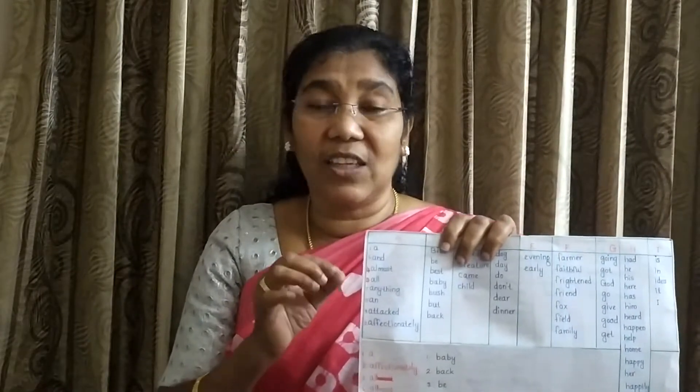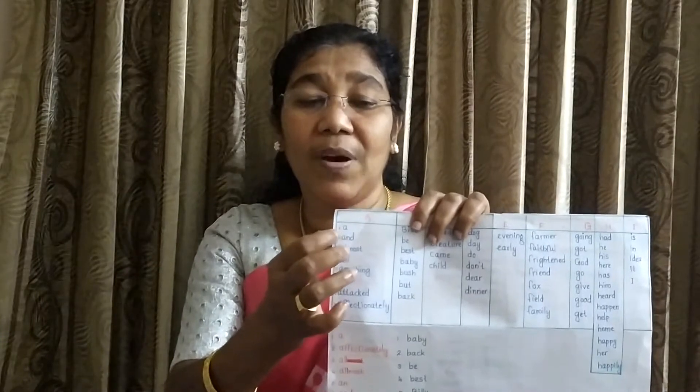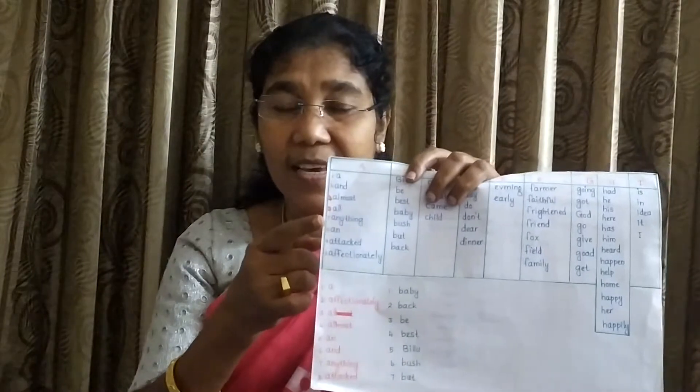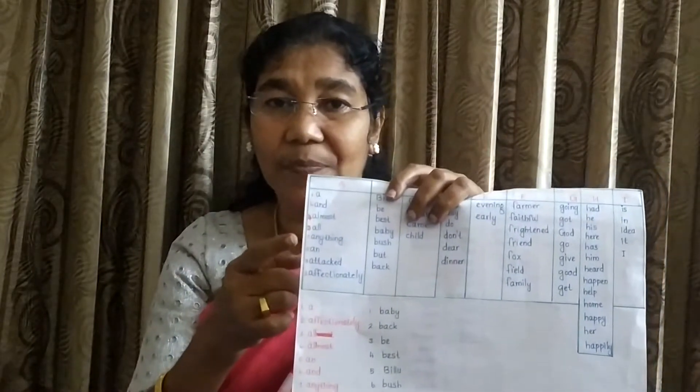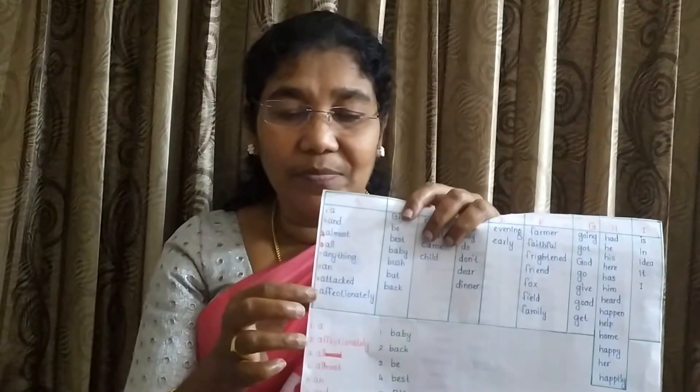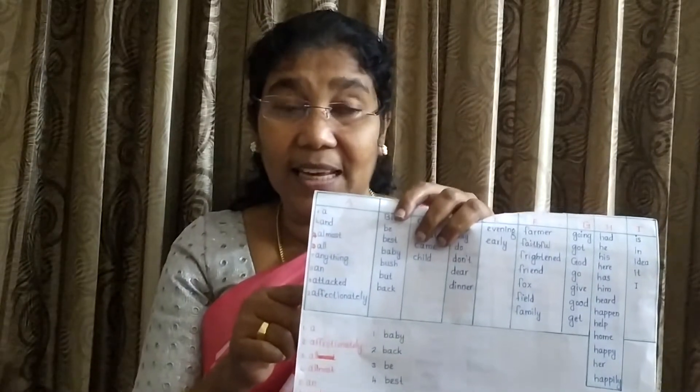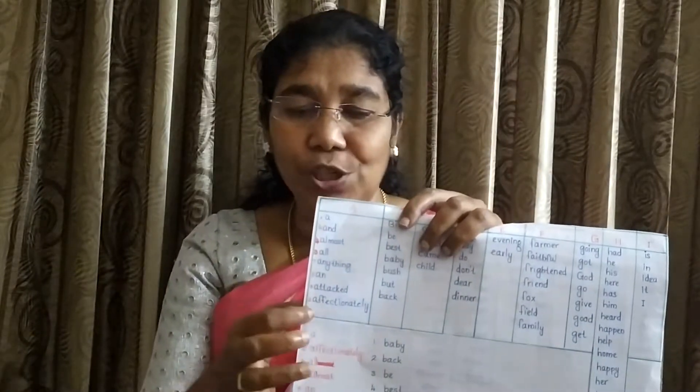First, you select the words beginning with A. Here I put A number 1 here. Then look at the second letter — B, C, D, E. Yes, there is a word with the second letter F: affectionately. So I put 2 here.